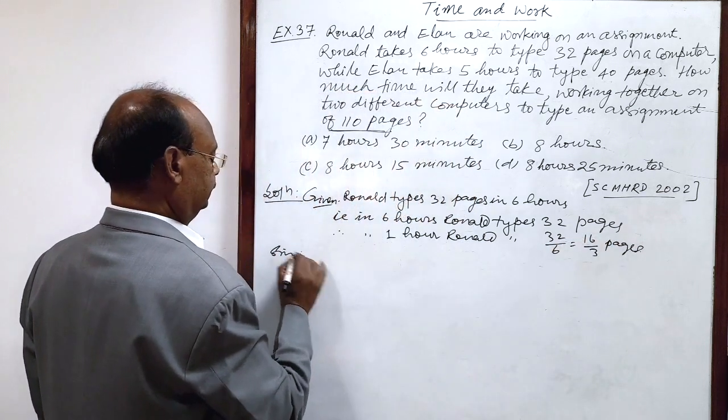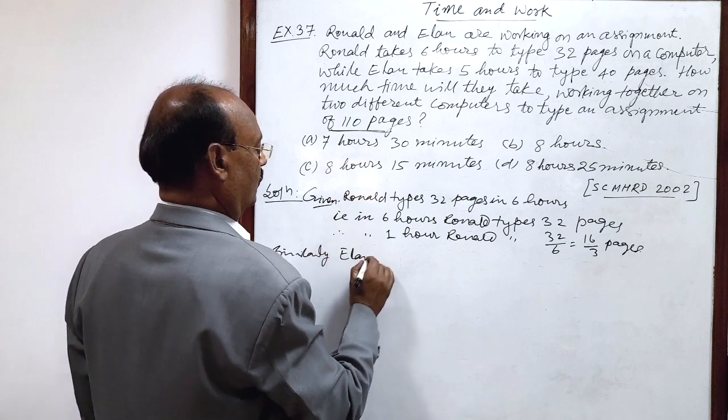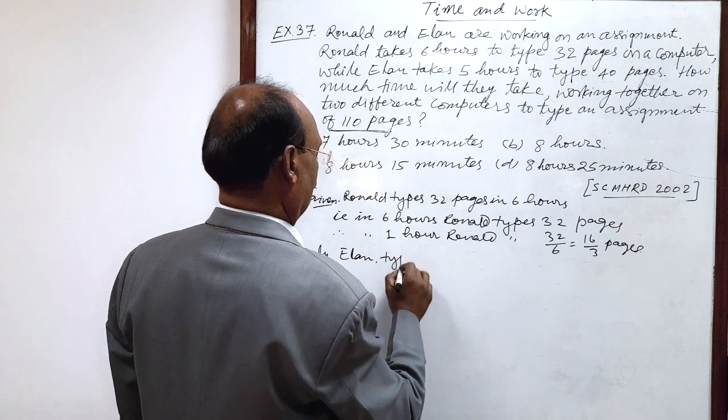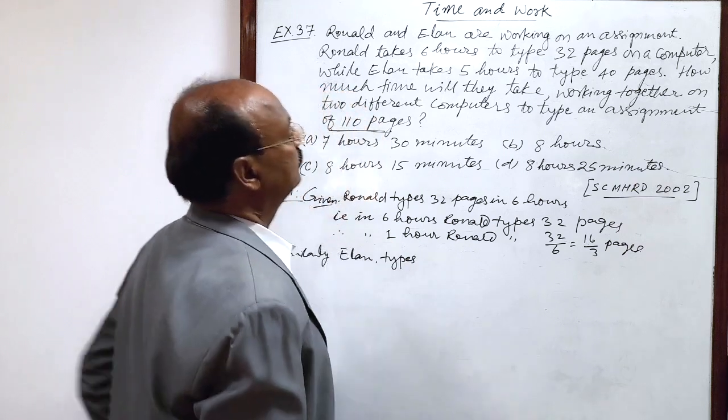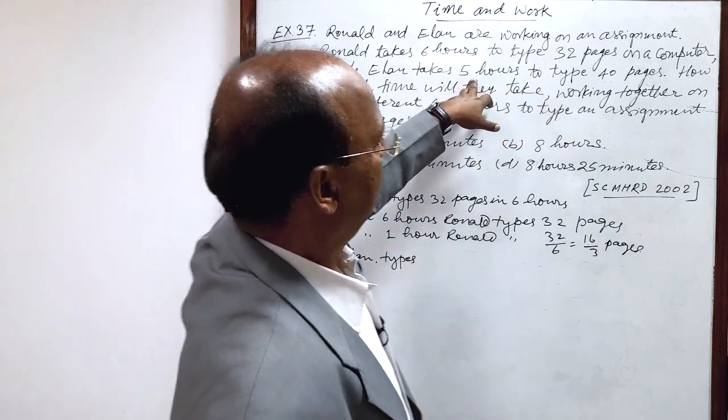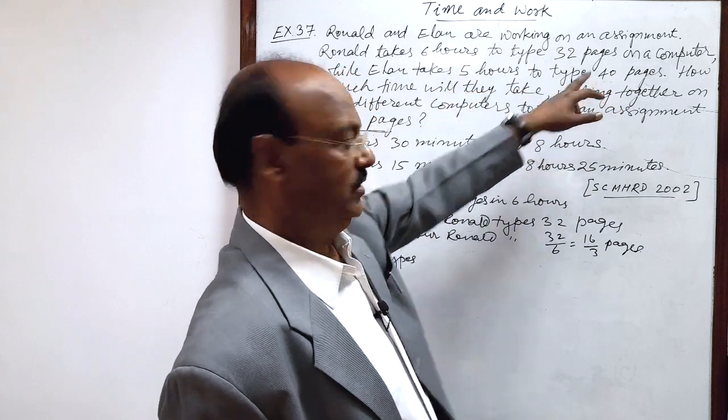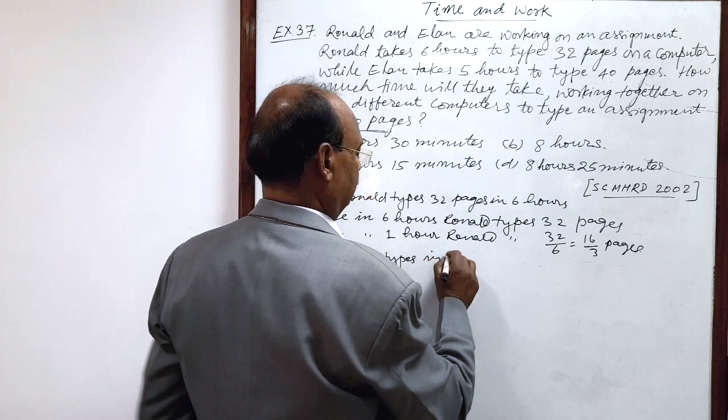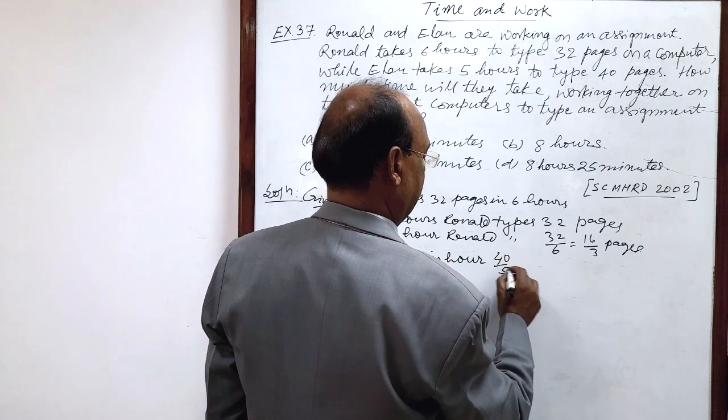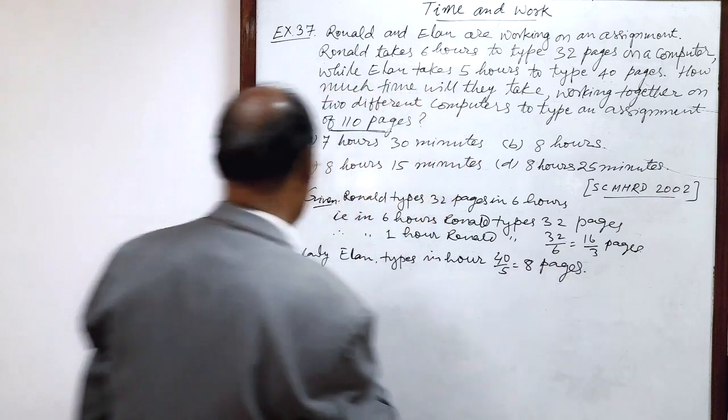Similarly, Alan types in five hours, 40 pages. So, in one hour, 40 by 5 pages. In one hour, 40 by 5, this is equal to 8 pages.